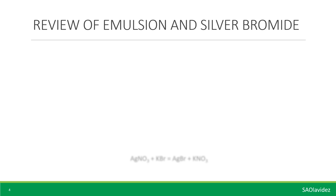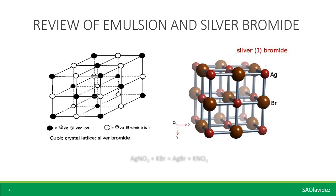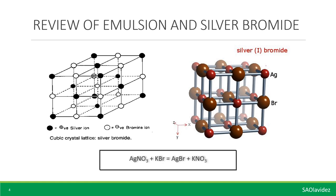Before we discuss latent image formation, let us again discuss the emulsion and the silver bromide crystal. Silver bromide crystal is made up of silver and one of the families of halogen — the bromide. Iodine is also used but in smaller quantity. The crystal is created by combining silver nitrate and potassium bromide. During this process, the silver gives off one electron that becomes attached to the bromide. The silver then becomes positively charged because it now lacks one negatively charged electron — it is called a silver ion.